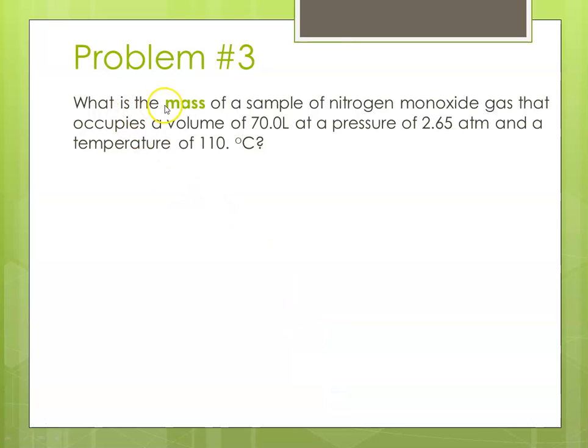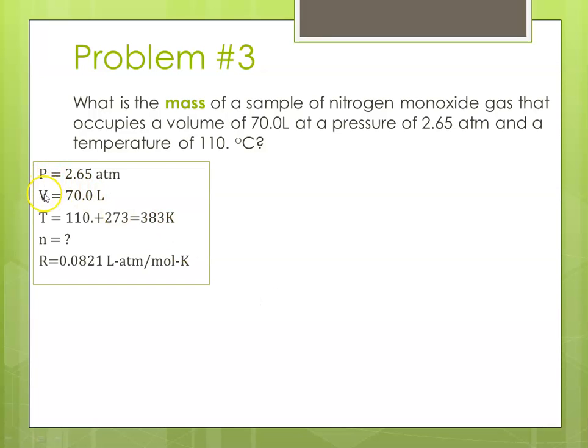Problem three: what is the mass of a sample of nitrogen monoxide gas that has a volume of 70 liters at a pressure of 2.65 ATMs and a temperature of 110 degrees C? So identifying the variables: my P, my V, my T converted to Kelvin, N is what I'm solving for, and R is our gas constant.